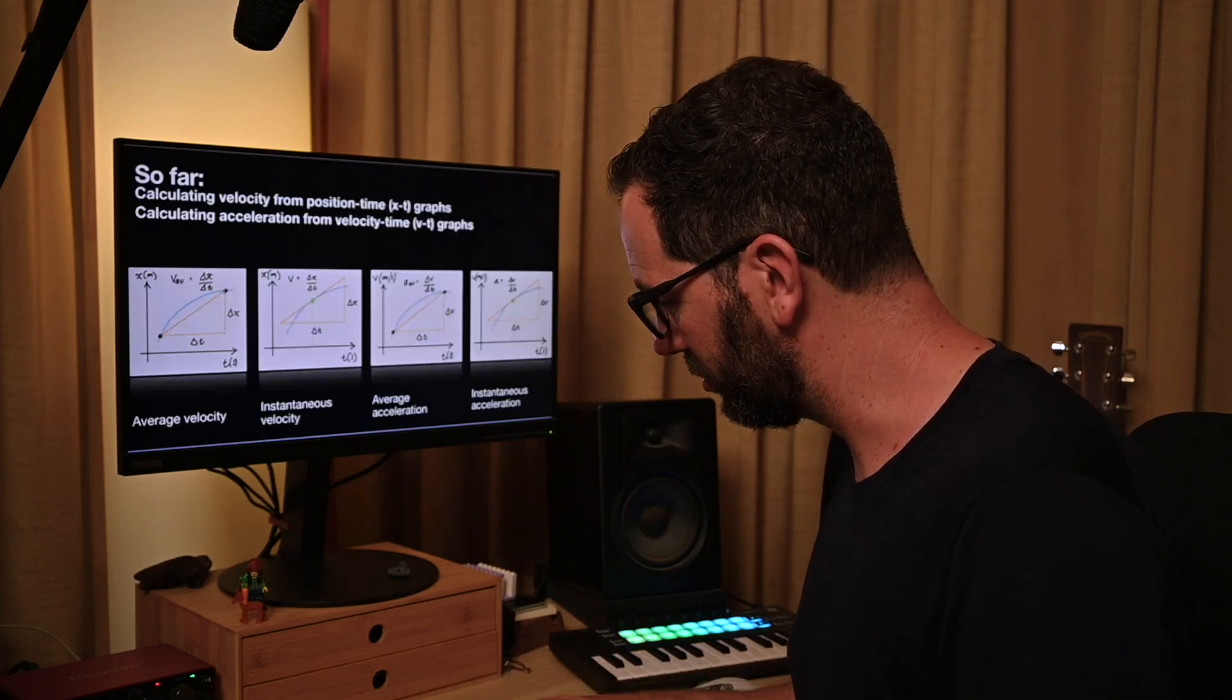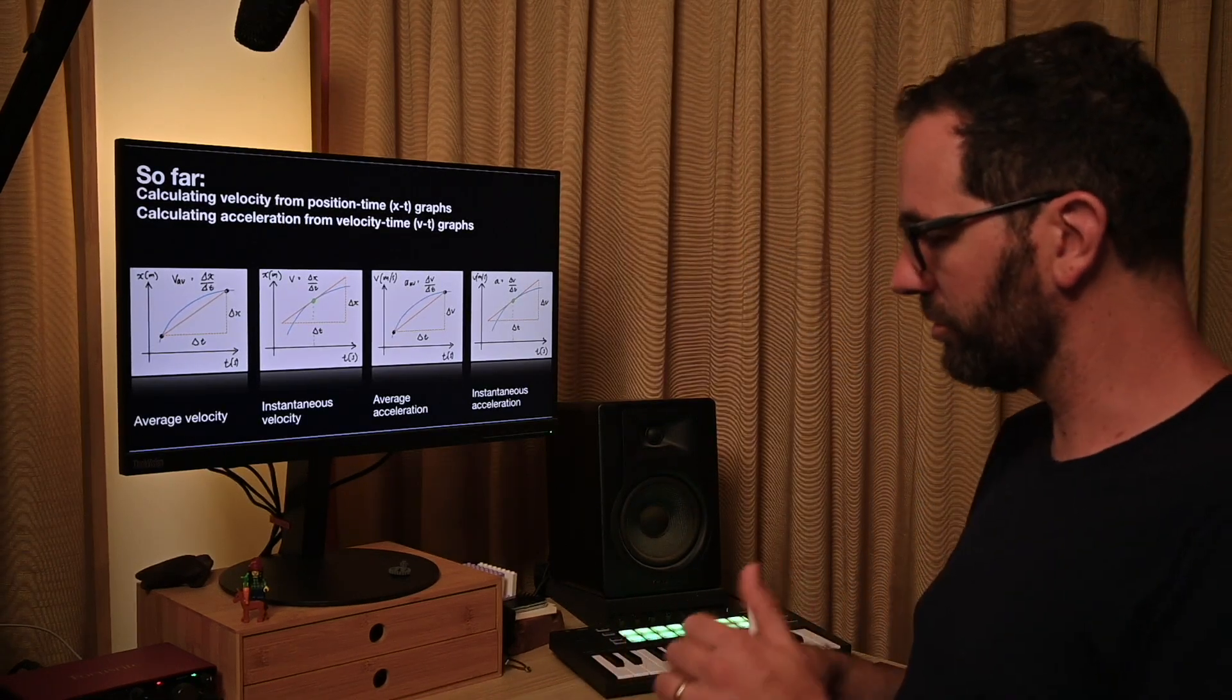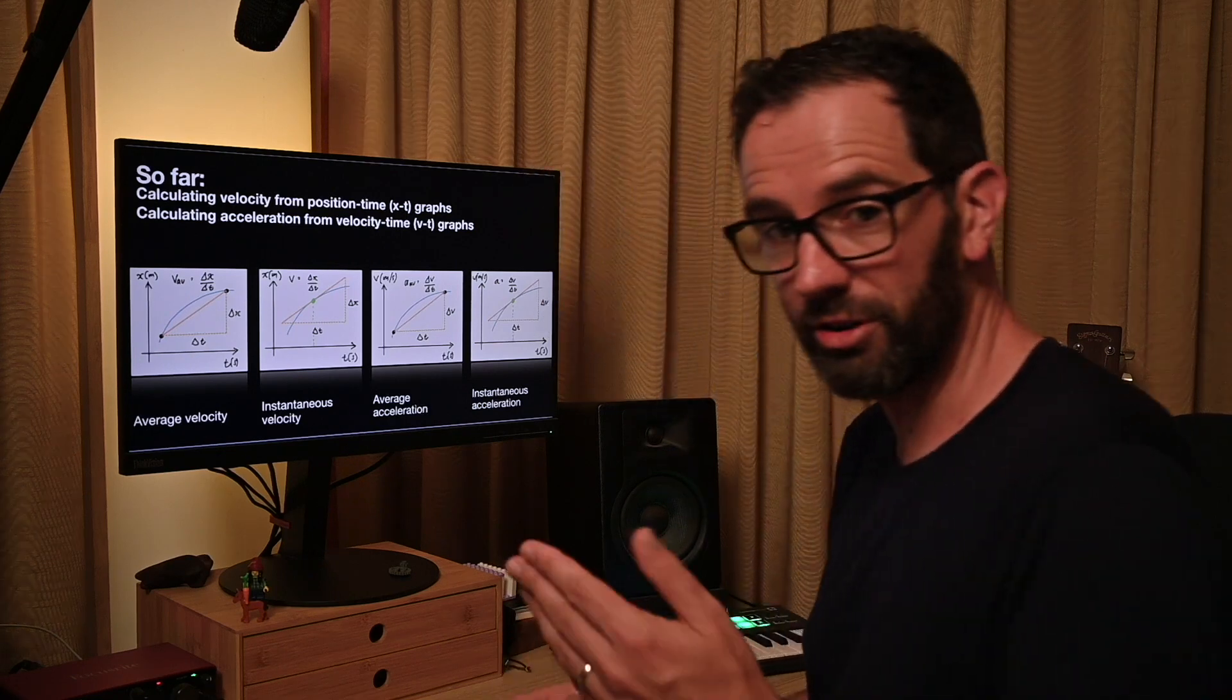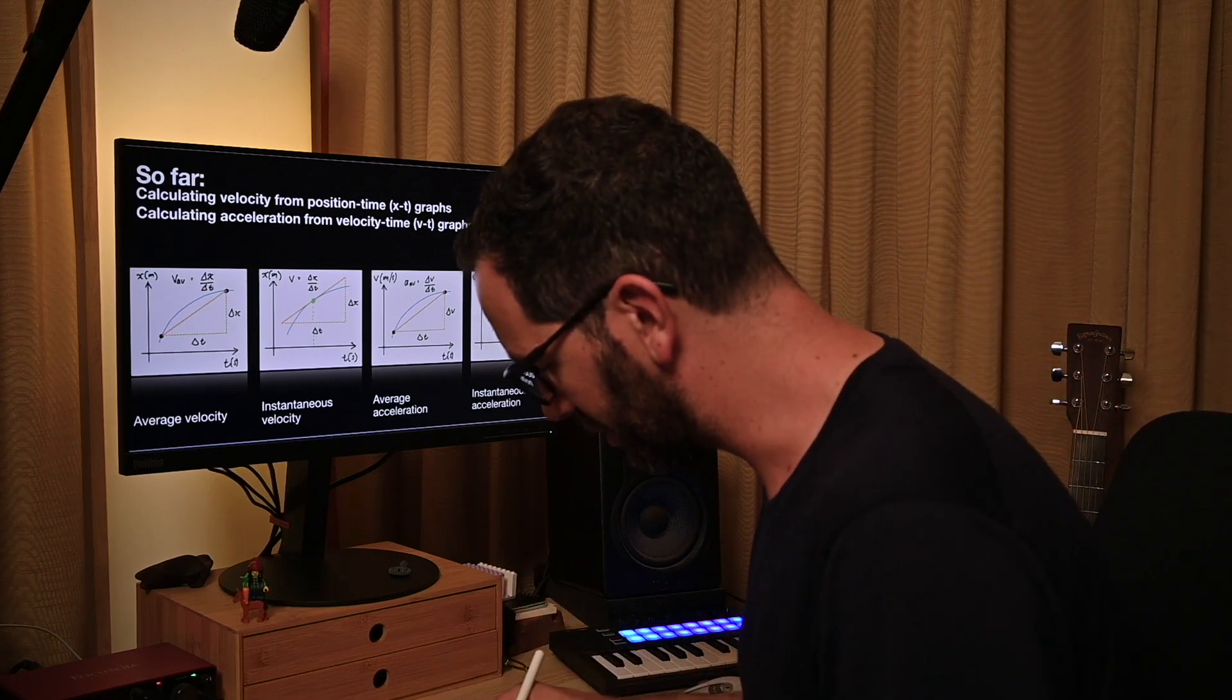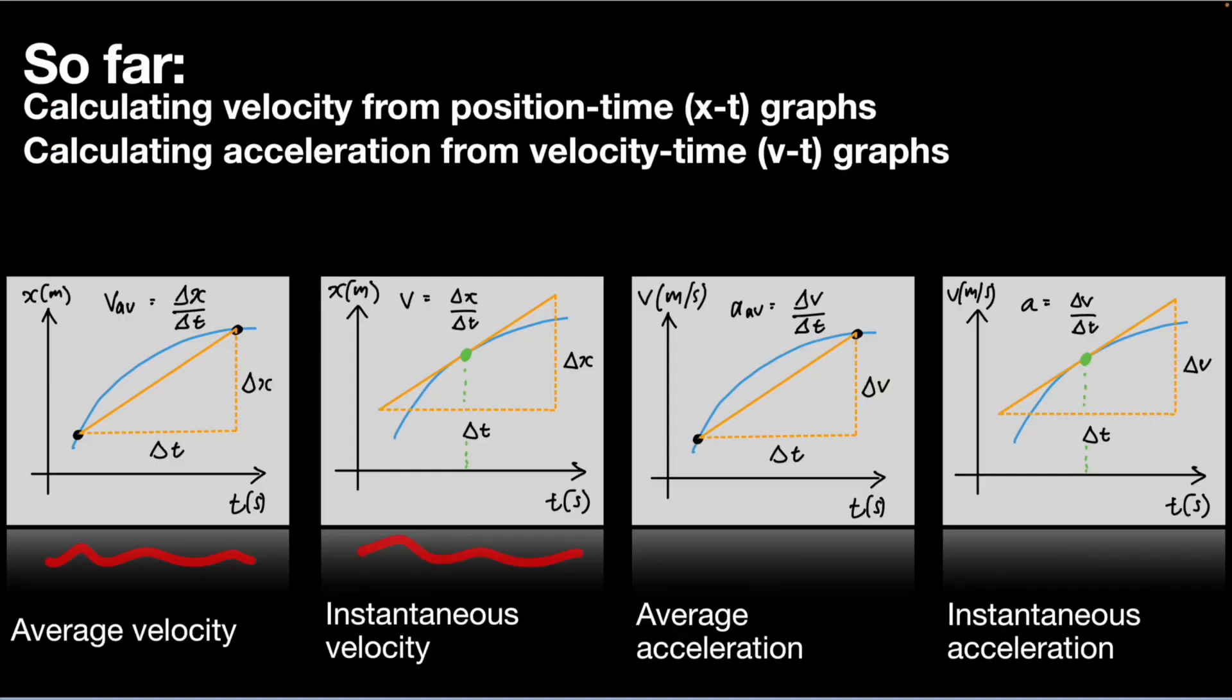Just to summarize what we can already do, so far we've learned how to calculate velocities from position-time graphs. I look at x and t and can calculate an average velocity by taking two points on my graph and working out the rise divided by the run.